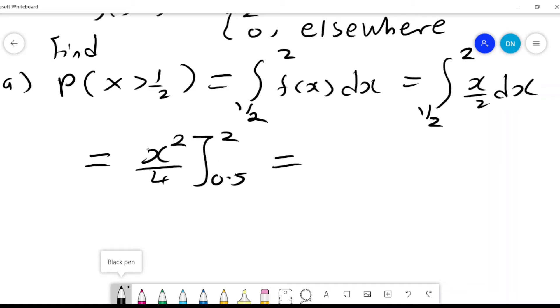And this will be 4 over 4 minus 0.25 over 4, and this is 1 minus 1 over 16. And that will be 16 minus 1 over 16, which equals to 15 over 16.